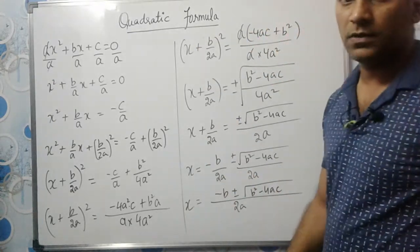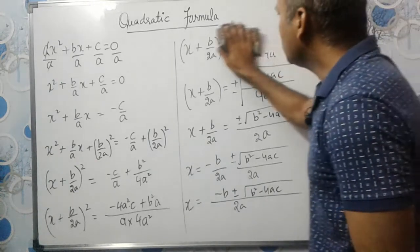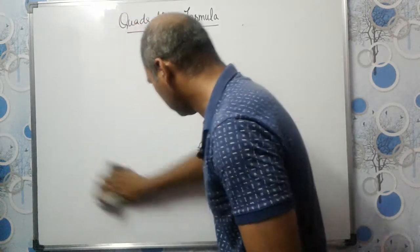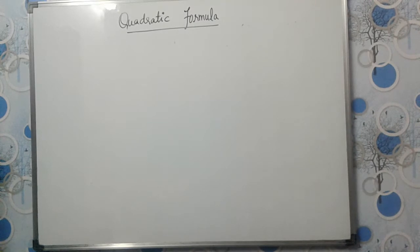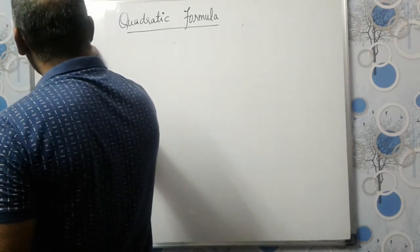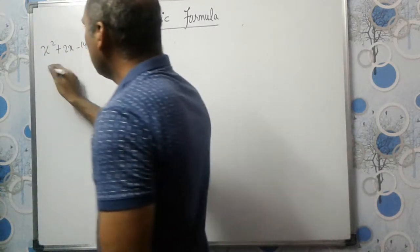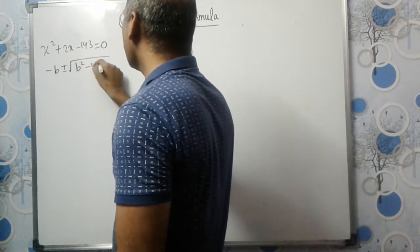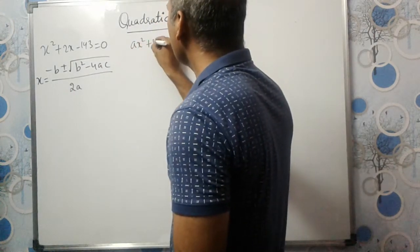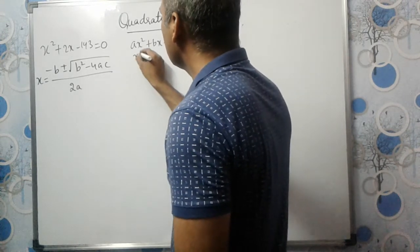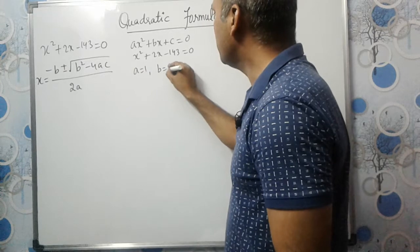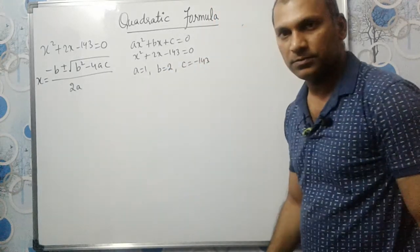Using this quadratic formula we can find the values of x. Let us do a few problems. First: x squared plus 2x minus 143 equals 0. We compare this with ax squared plus bx plus c equals 0. The value of a is 1, b is 2, and c is minus 143.